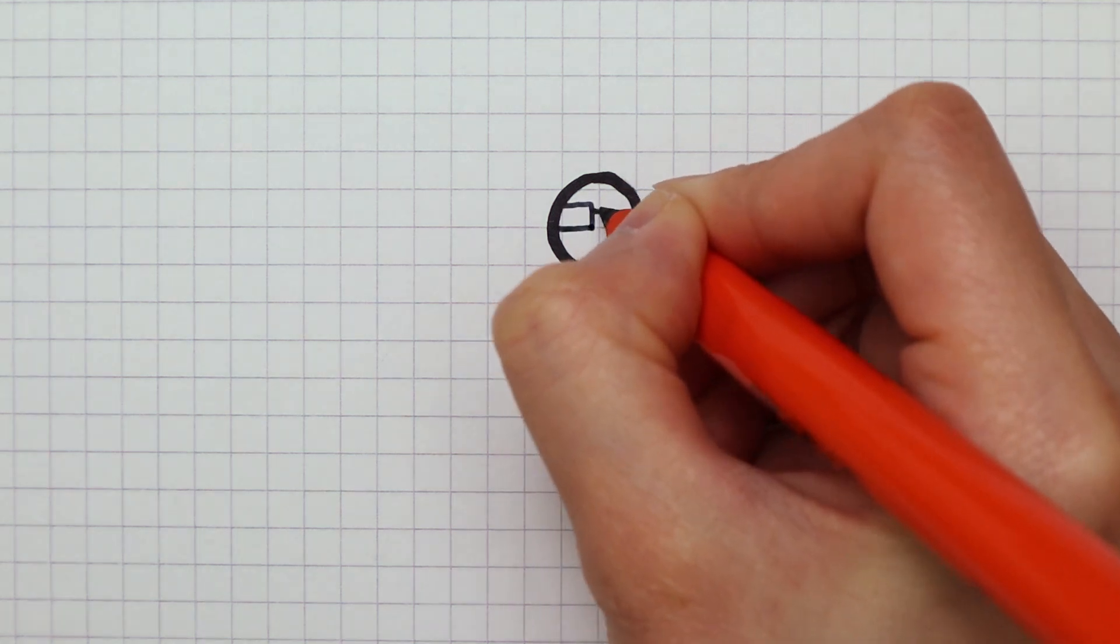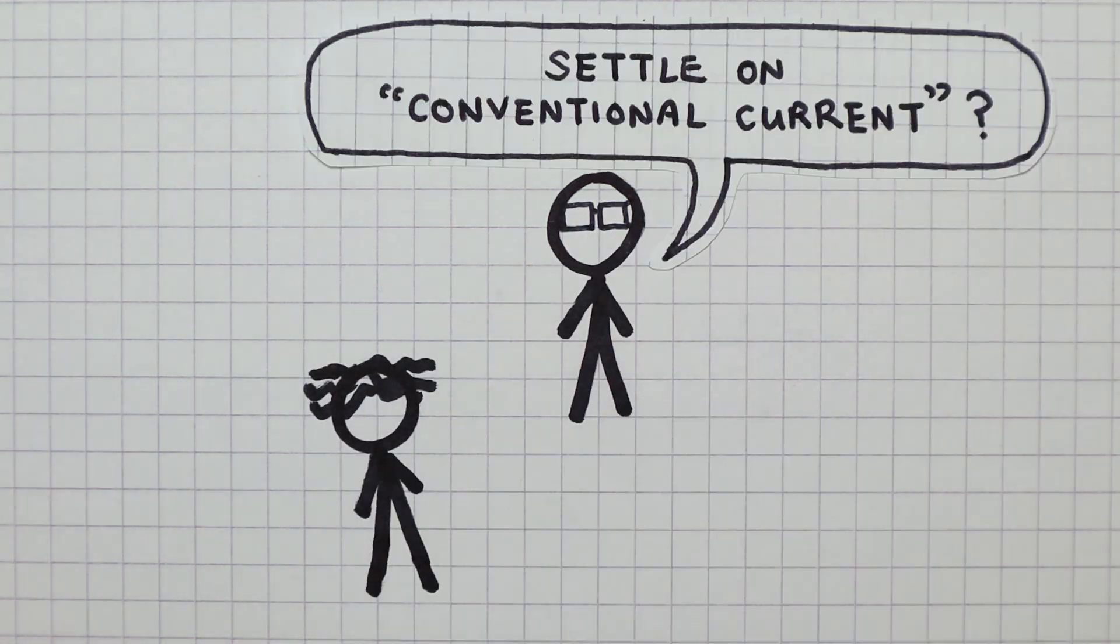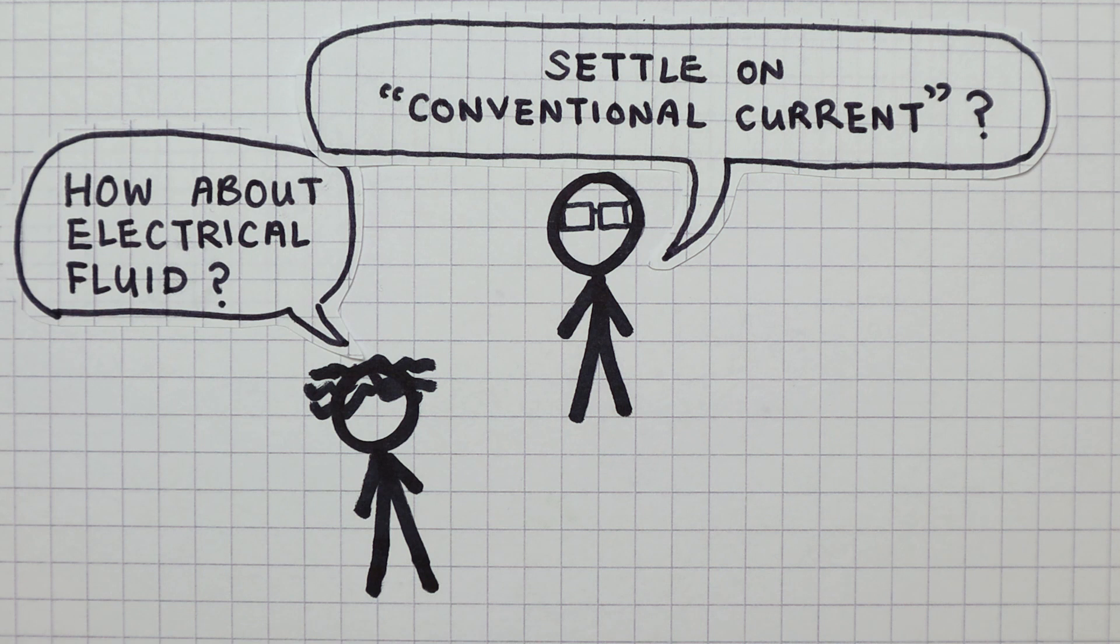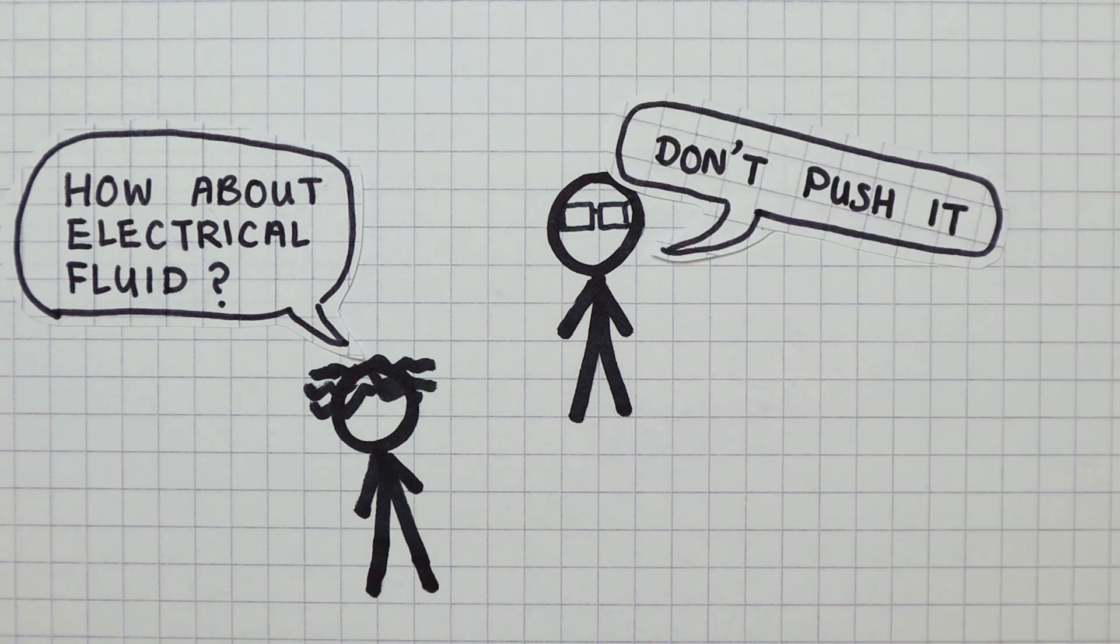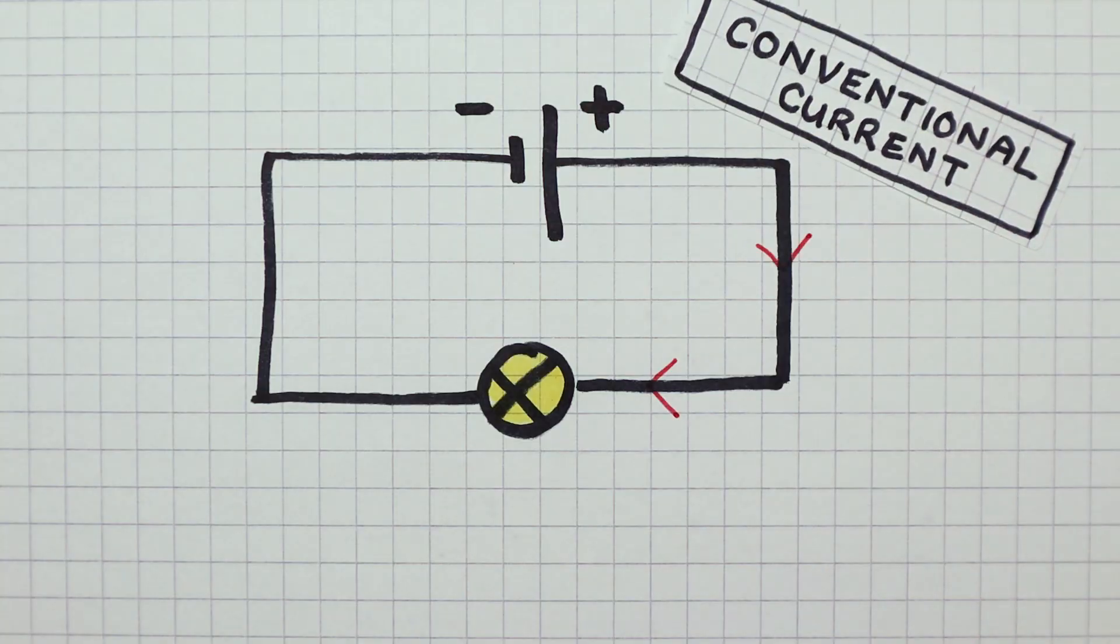It's going to sound ridiculous, but the conventional current is still the standard way of analyzing circuits today. So at school, when your physics teacher mentions current, that defaults to the conventional current.